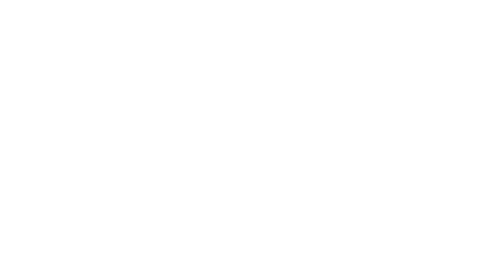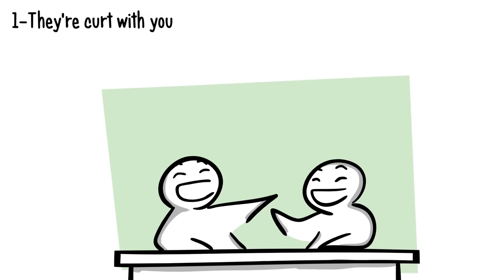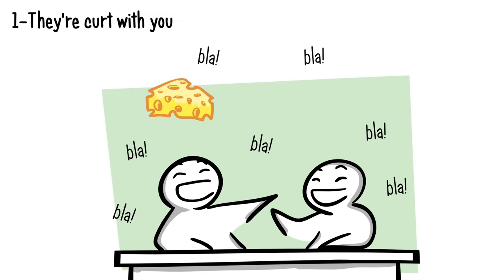Here are 10 signs someone secretly dislikes you. Number one: they're curt with you. Do you ever feel like you can talk to your best friend 24/7? Even if the two of you aren't having a deep philosophical conversation, talking about something as silly as cheese or bricks seems entertaining, right?